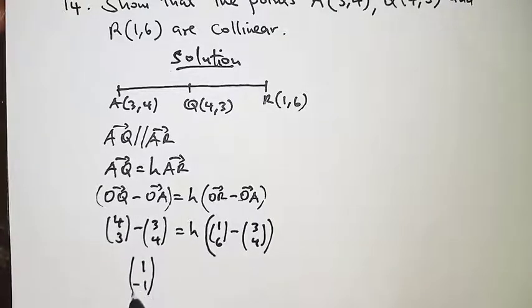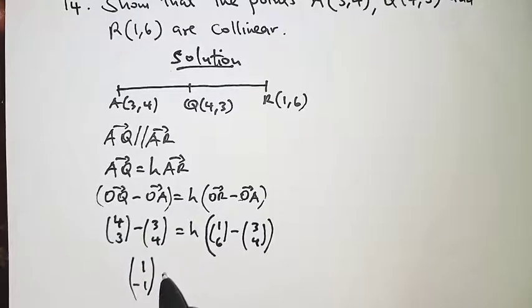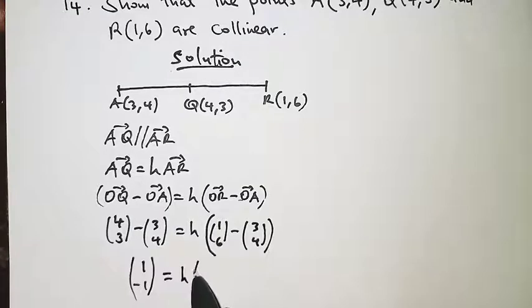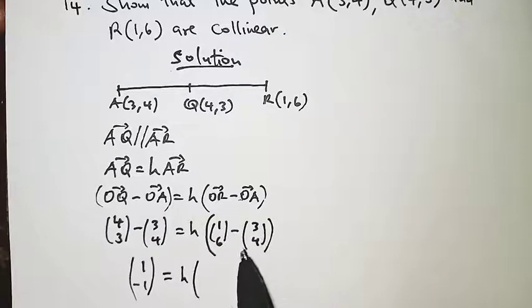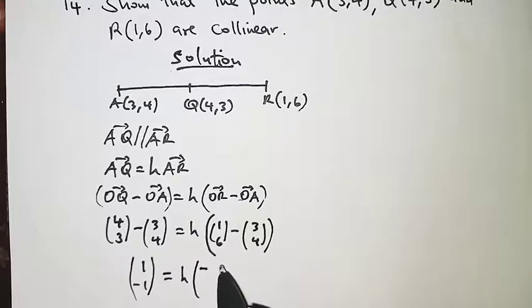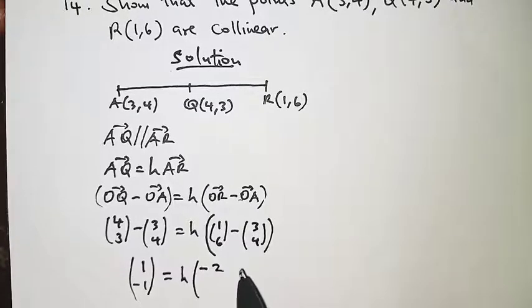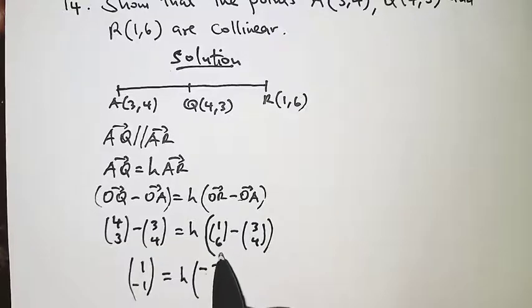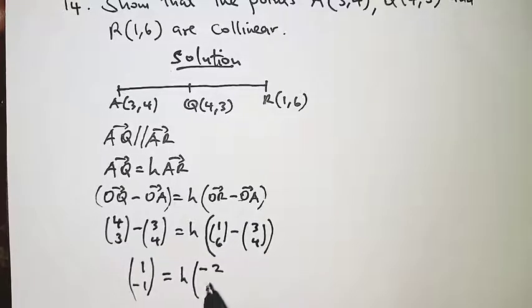Don't forget about the brackets, so that is vector (1, -1). And then on the other side we have h into 1 minus 3, that should give us -2, and 6 minus 4, that should give us 2.